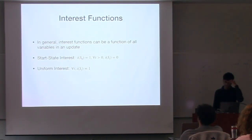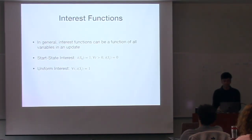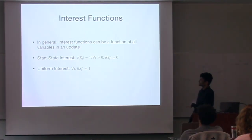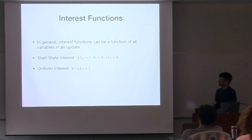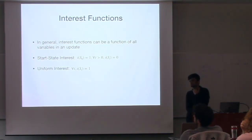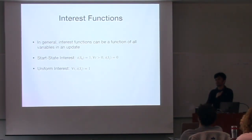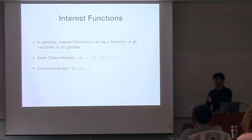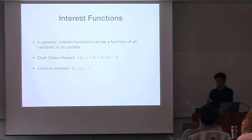Now I'm going to talk about the interest functions I used. In general, interest functions can be a function of all variables in an update - that's the most general sense. But what I'll focus on here are ones based on time: start state interest, which is essentially interest only on the first state with zero interest for all future states; and uniform interest, where you have interest of one for all states. The interest can also be dependent on the time step or other things - for example, a particular interest function that uses the discount factor and lambda, which is actually equivalent to TD.